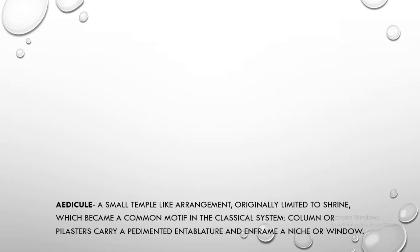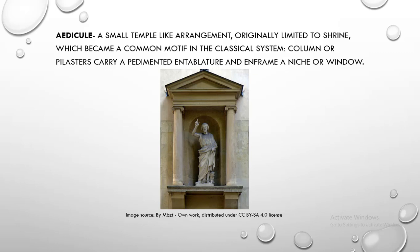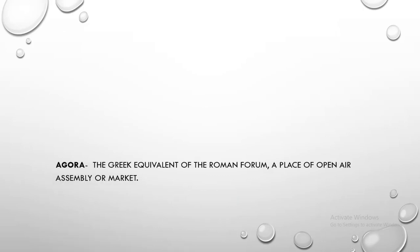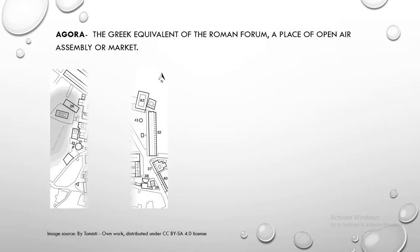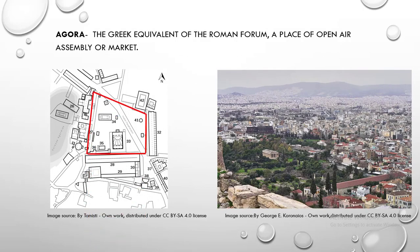Aedicule. Aedicule is a small temple-like arrangement, originally limited to a shrine, which became a common motif in the classical system; columns or pilasters carry a pediment and entablature and end frame a niche or window. Agora. Agora is the Greek equivalent of the Roman forum, a place of open-air assembly or market.